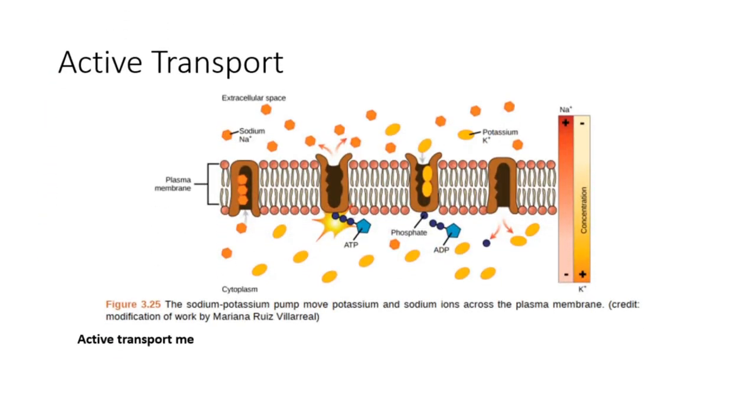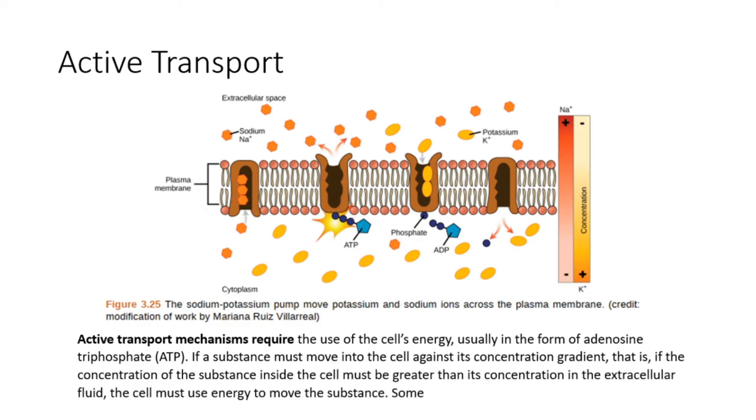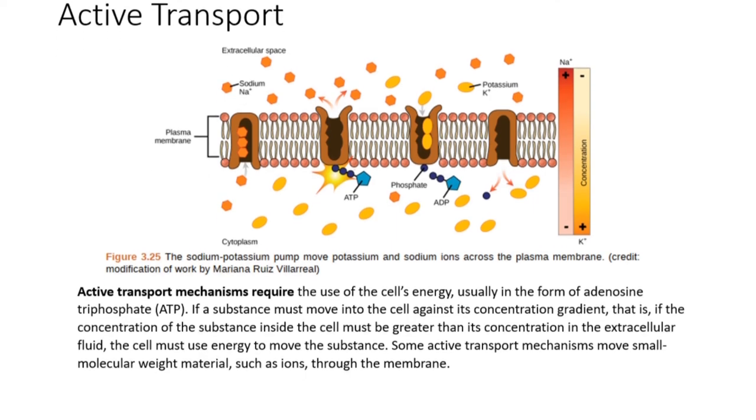Active transport mechanisms require the use of the cell's energy, usually in the form of adenosine triphosphate, ATP. If a substance must move into the cell against its concentration gradient, that is, if the concentration of the substance inside the cell must be greater than its concentration in the extracellular fluid, the cell must use energy to move the substance. Some active transport mechanisms move small molecular weight material, such as ions, through the membrane. That is a quick summary on transport across membranes for the exam.